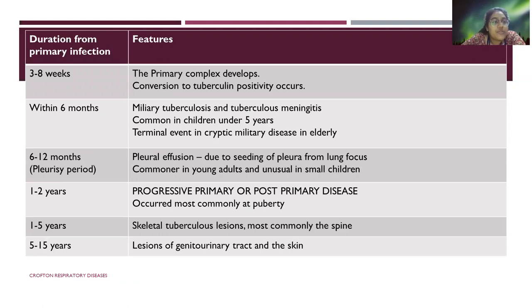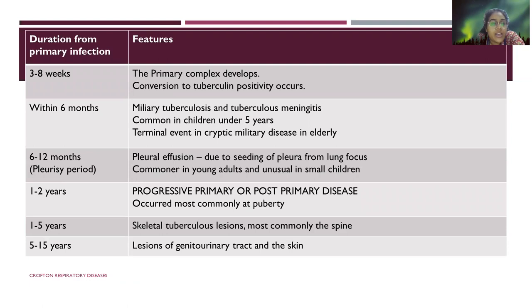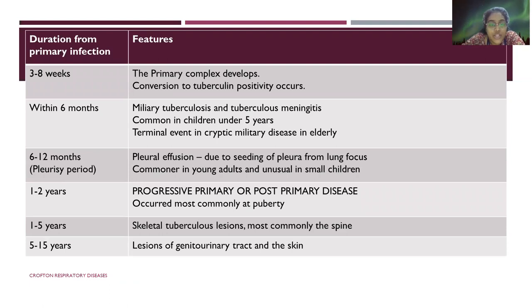Three to eight weeks from the primary infection, primary complexes develop with conversion to tuberculin positivity. Within six months, there are chances to develop miliary tuberculosis or tuberculosis meningitis, which is common in children under five years.